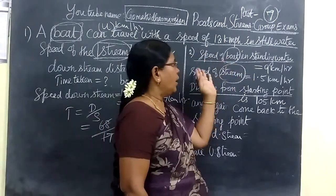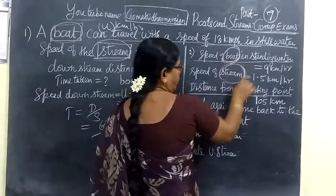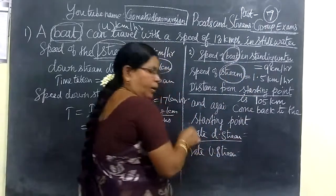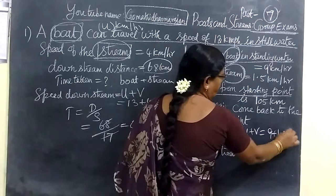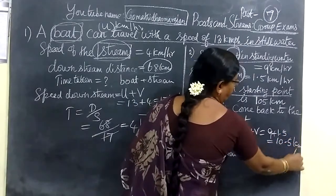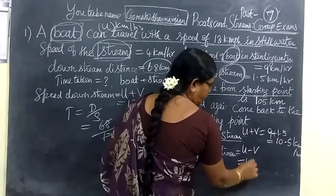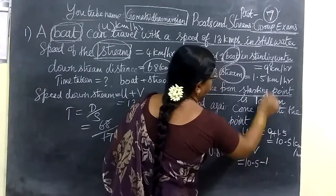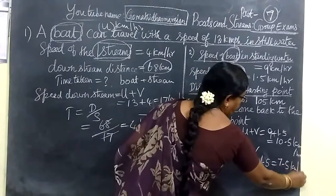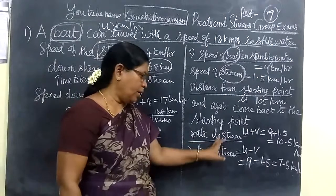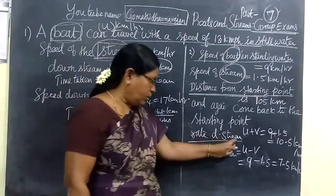Here is the speed of boat and speed of stream. Speed of boat to speed of stream - immediately mark it like this and find downstream. The rate downstream equals U plus V, that means 9 plus 1.5 equals 10.5 km per hour. The rate upstream equals 7.5 km per hour. We know rate of stream and rate downstream. The distance covered is 105 km in downstream and then it comes back to the starting position.